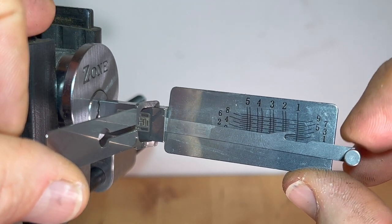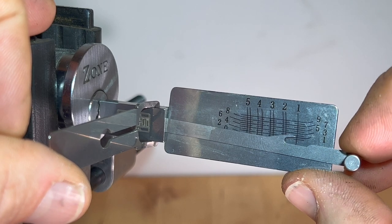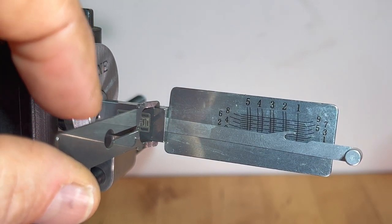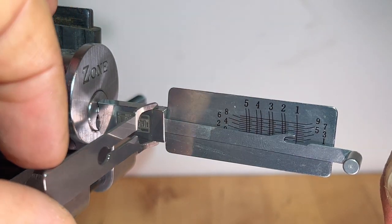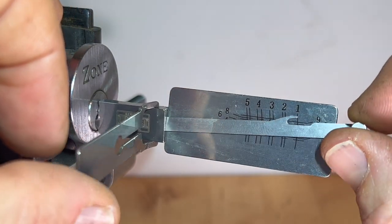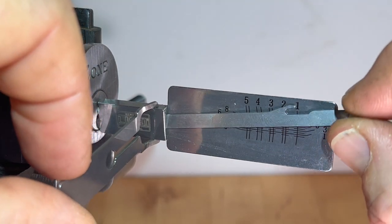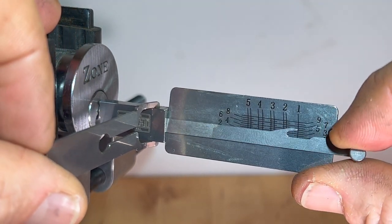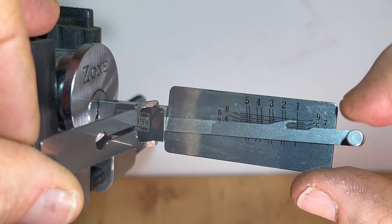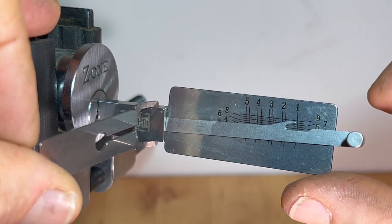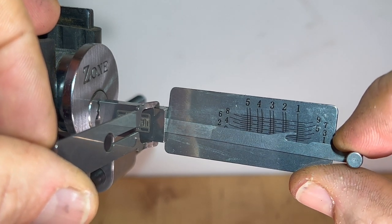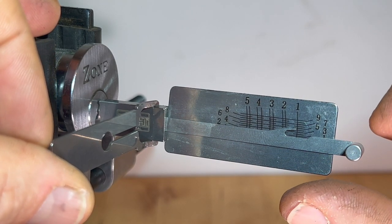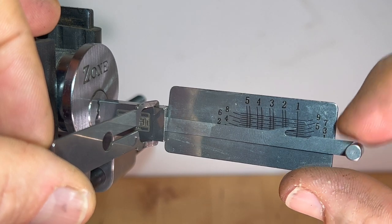So let's just reset that, because this could easily trip you up. When you push down and it gives you a first click there, that first click is the pick actually navigating its way through the warding on the lock. There's the second click.